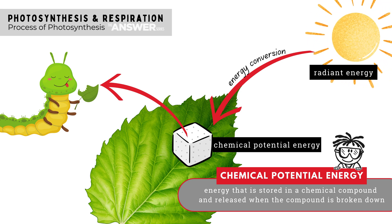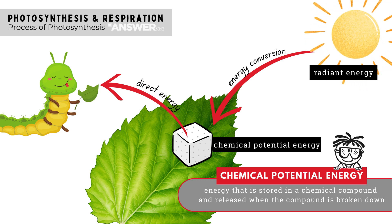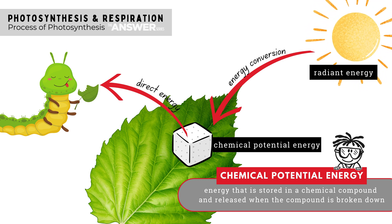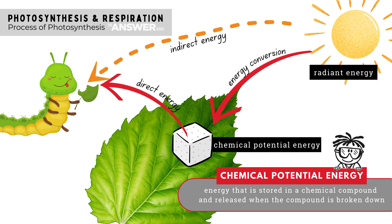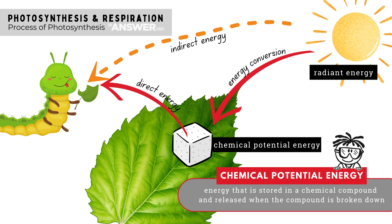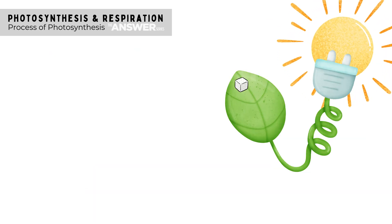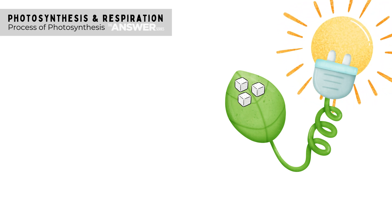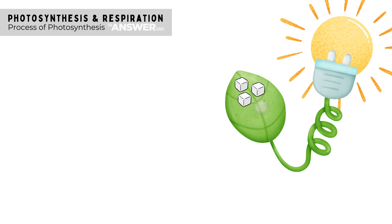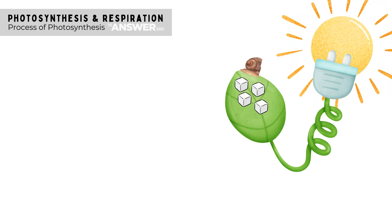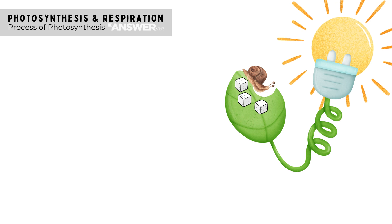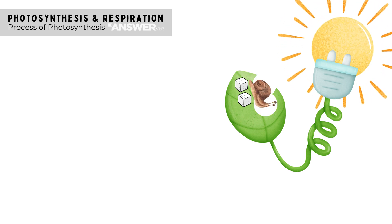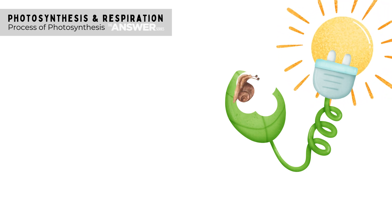An animal that eats the plant will have direct access to the chemical potential energy stored within the plant tissues, and through this, the animal has indirect access to the radiant energy from the sun. So in simple terms, plants are kind of like solar panels — they can directly use the energy from the sun to produce food. Animals can't do this; they can only access the sun's energy indirectly by eating the food that the plants have made.